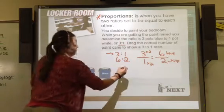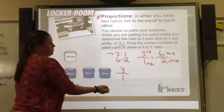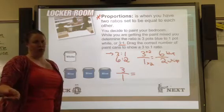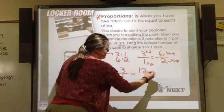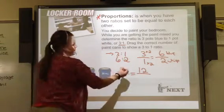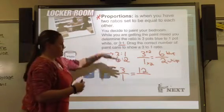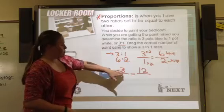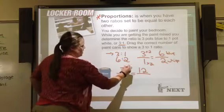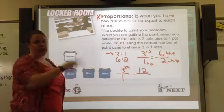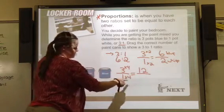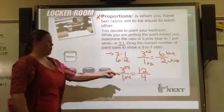If my original ratio is three blue to one white, and the store has 12 cans of blue, I can figure out how many white I need. Think of it as equivalent fractions: how did I get from three to 12? I multiplied by four. What you do to the top, you do to the bottom. So I multiply the bottom by four as well, and that tells me I need to buy four cans of white.